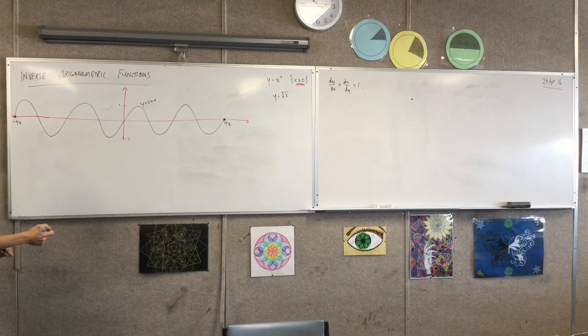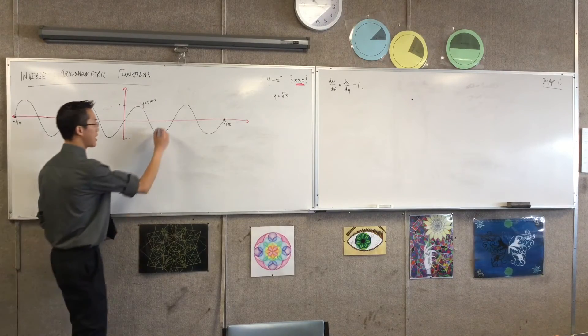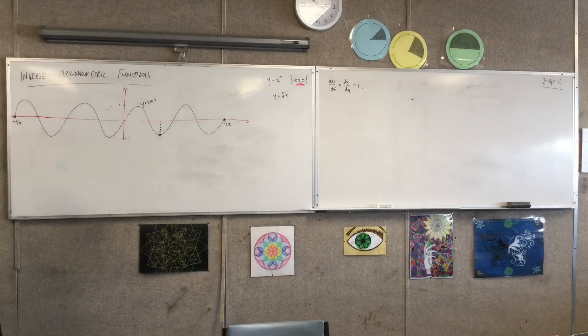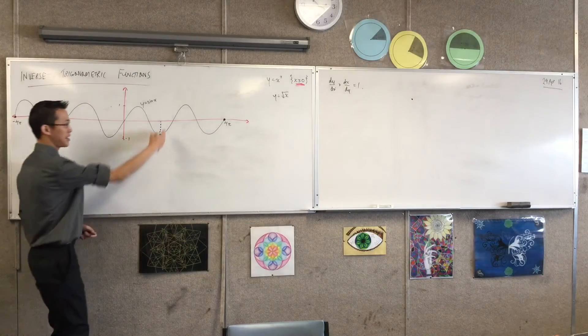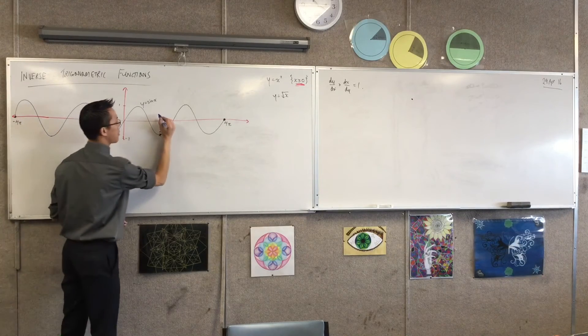If I were for instance to say okay, here's a stationary point right here, what's that value? Radians guys what's that value? Three π on two. Three π on two right. Because that's 2π so one two that's one and a half of them so three π on two.